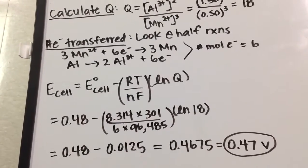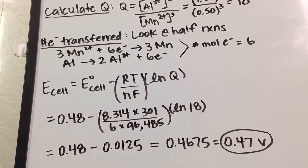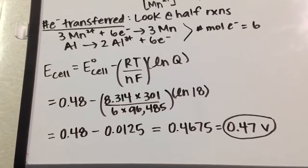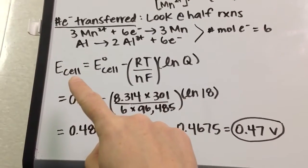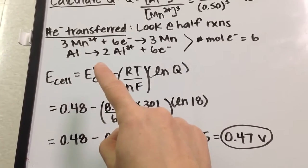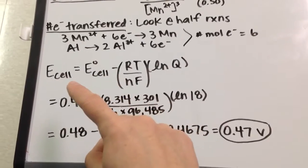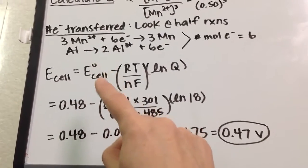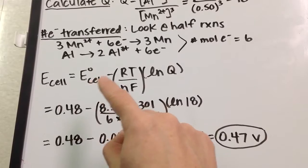Now we find the new E-cell value under these non-standard conditions. E-cell under non-standard conditions—because remember the degree sign means under standard conditions—is equal to E-cell under standard conditions, minus,